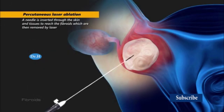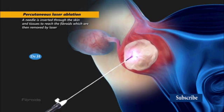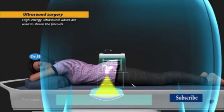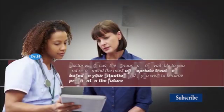Additional surgical options include percutaneous laser ablation, where a needle is inserted through the skin and tissue to treat the fibroids which are then removed by laser, and ultrasound surgery, where high energy ultrasound waves are used to shrink the fibroids.